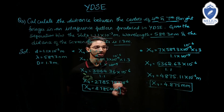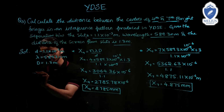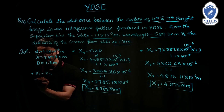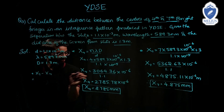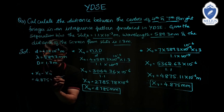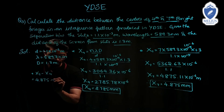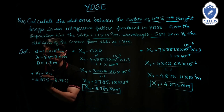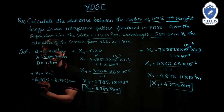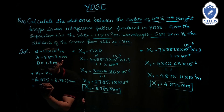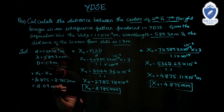The distance between the 4th and 7th bright fringe is X7 minus X4 equals 4.875 millimeter minus 2.785 millimeter equals 2.09 millimeter.